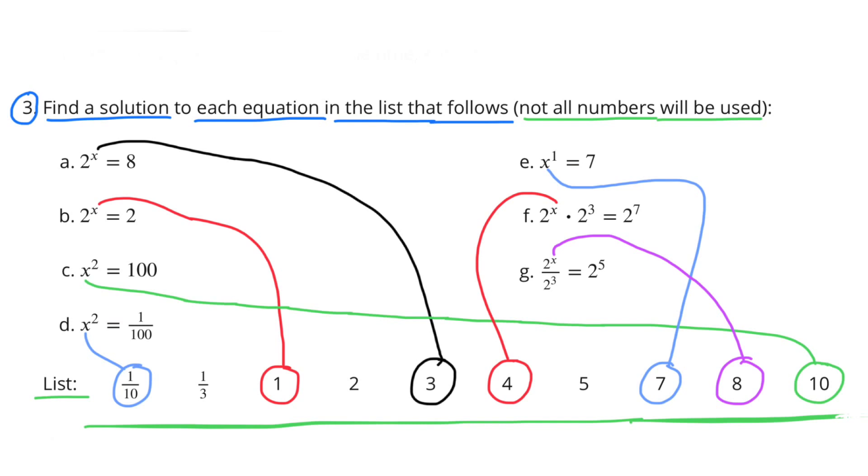Part D. X to the power of 2 equals 1 over 100. Substitute 1 tenth for X. And you have 1 tenth to the power of 2, which is 1 tenth times 1 tenth, equals 1 over 100.